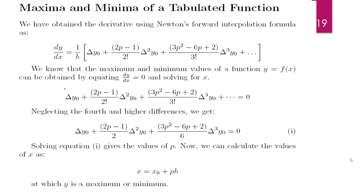For maxima and minima, we consider the first order derivative of the Newton forward interpolation formula. For obtaining maximum and minimum values of y = f(x), we equate the derivative dy/dx to 0 and solve it. After solving this, we get the values of p, and then x = x₀ + ph. At this point, we find whether y is maximum or minimum.